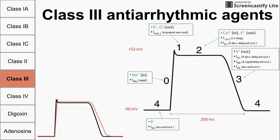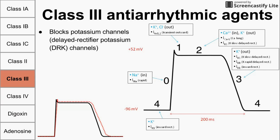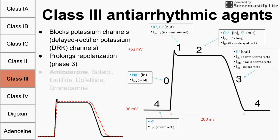Class 3 antiarrhythmic agents collectively block potassium channels, specifically the DRK delayed rectifier potassium channel. Phase 3 repolarization of the myocyte action potential is caused by potassium leaving the cell. So blocking that channel results in a less steep slope during phase 3, prolonging repolarization. A key drug in this class is amiodarone.